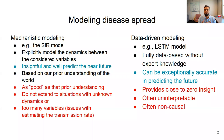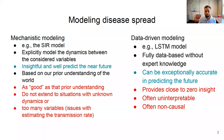In the mechanistic approach, a set of variables are considered and the dynamics between these variables are explicitly modeled. These models are quite insightful and have proven to predict the near future quite well. However, they are based on our prior understanding of the world — all these equations are based on some prior knowledge. A shortcoming is that they are only as good as that prior understanding: if that understanding is wrong, the same applies to the result.